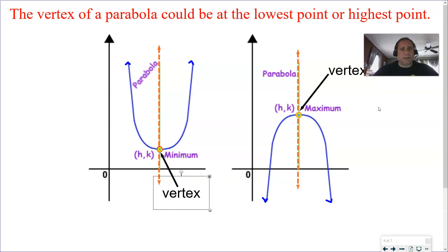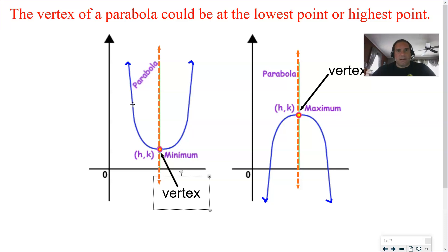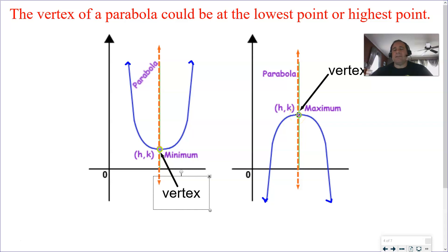Here you can see that this parabola has a positive coefficient before the x squared. You notice the parabola is facing up and the vertex is at the minimum — the lowest point of that parabola. On the right hand side, this parabola is facing down. That means you would have something like y equals negative 3x squared, and it would face down. So that vertex would be at the top of the parabola, and that is known as a maximum.